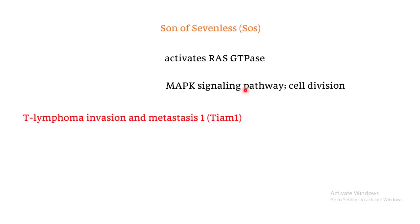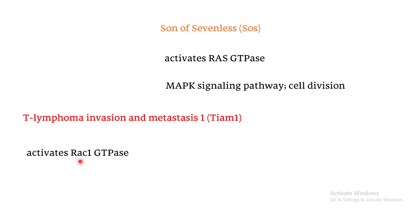Another important example is T-lymphoma invasion and metastasis 1, or TIAM1. This GEF activates the RAC1 GTPase by replacing the GDP attached to that protein with a GTP. When RAC1 is activated, it plays a very important role in cell migration.